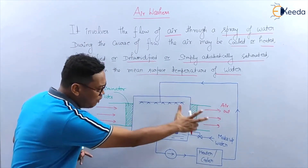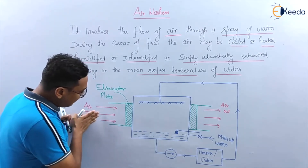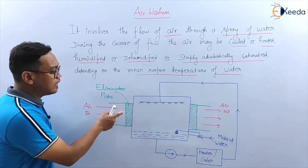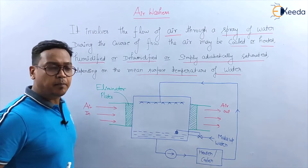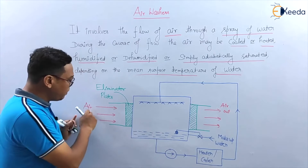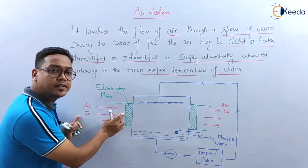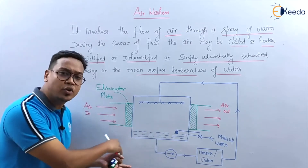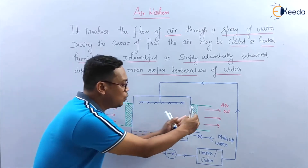Here is the diagram of the air washer. Air is entering into this air washer. These are the eliminator plates. These eliminator plates help to protect the moisture — they hold the moisture content and prevent water droplets from going in and out.